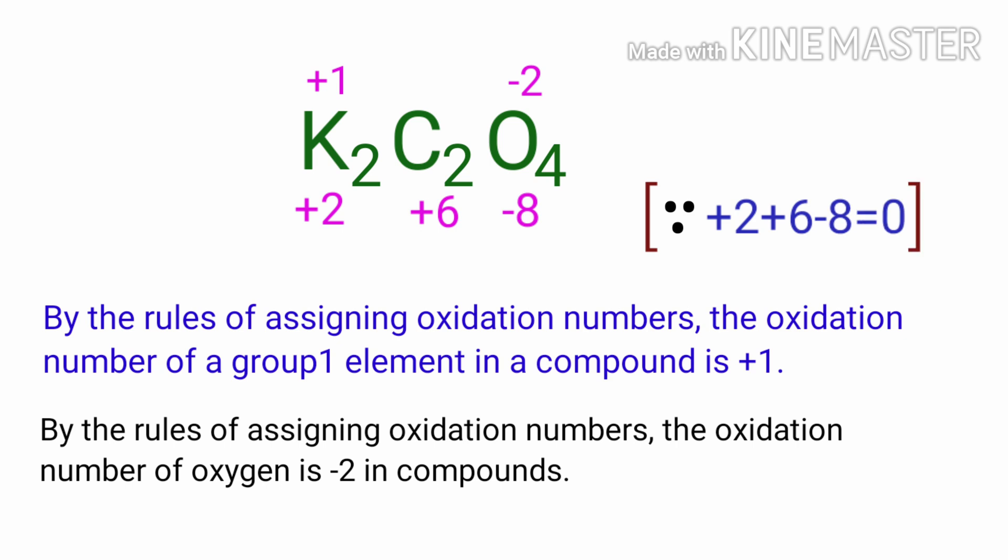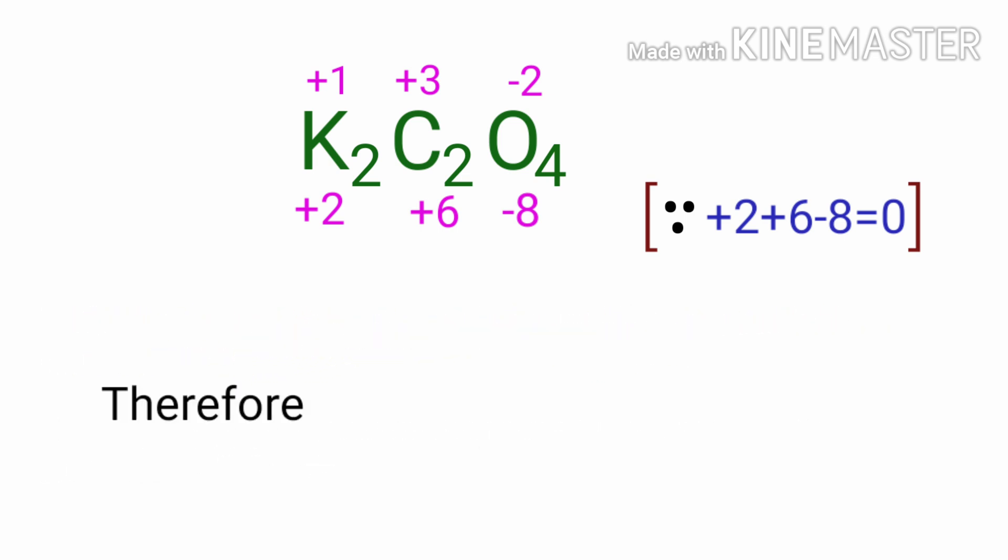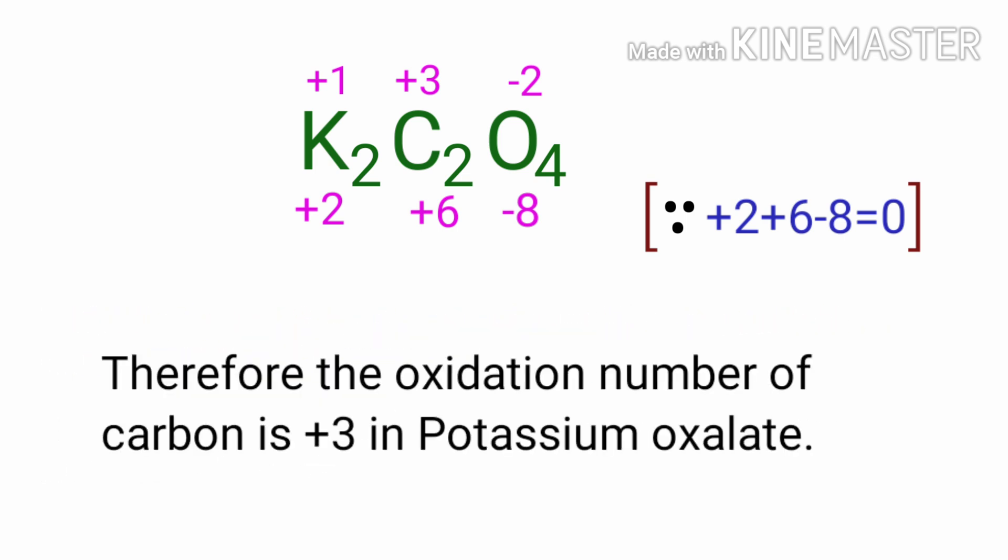In the C2 element, there are two carbon atoms present, so we can write the oxidation number of carbon is plus three. Therefore, the oxidation number of carbon is plus three in potassium oxalate.